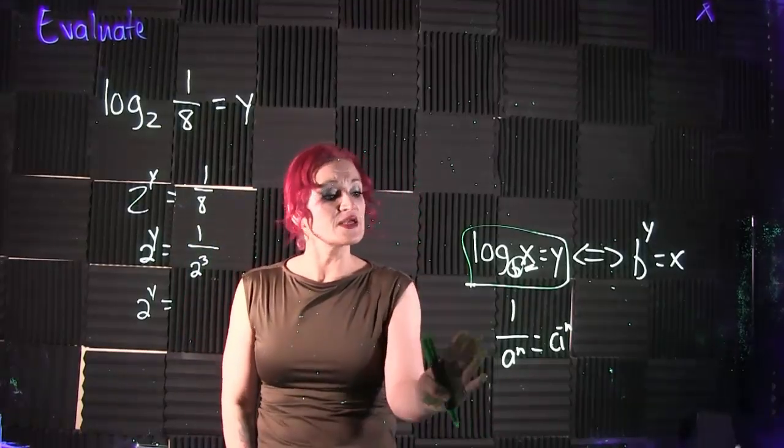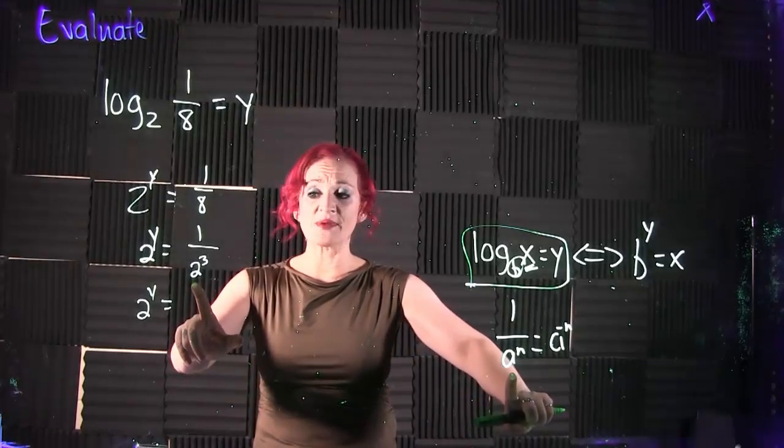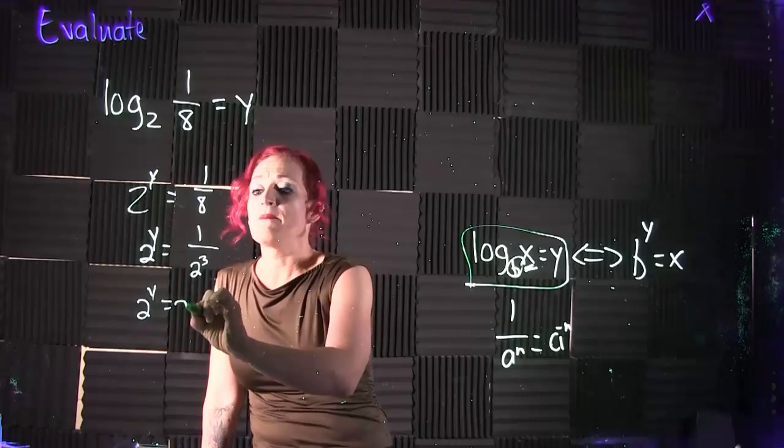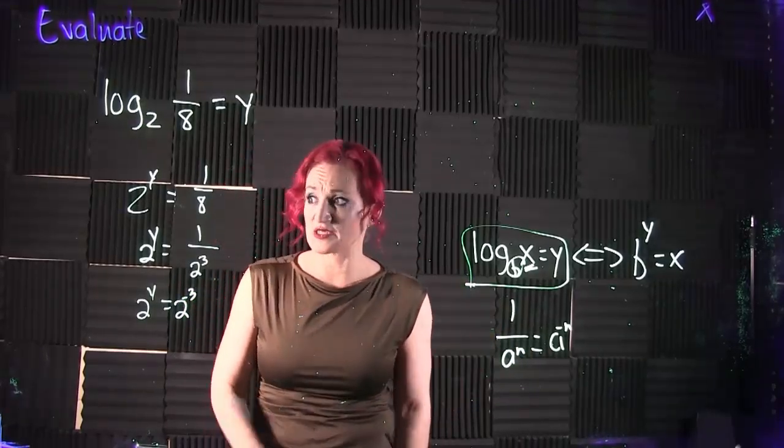And the way that we can do that is using the negative exponent rule. Anytime you have an exponent in the denominator and you want to move it up, you can move it up by changing the sign of your exponent. That's what the negative exponent rule does for us.